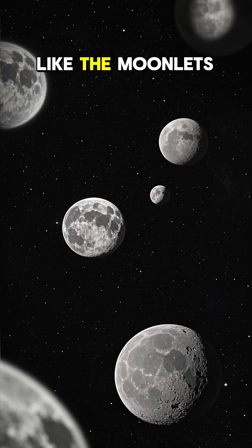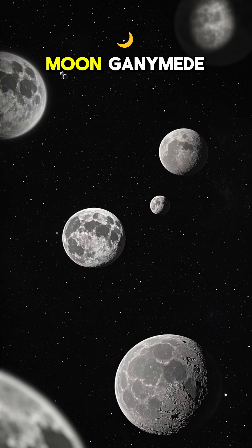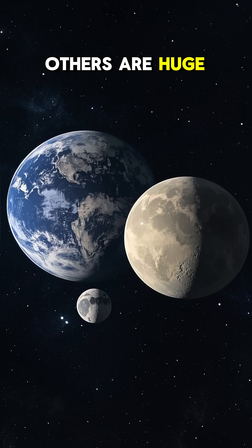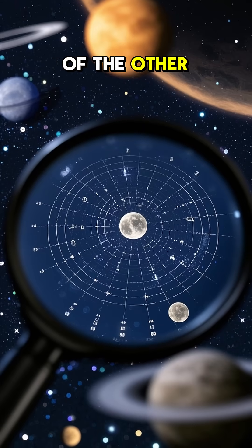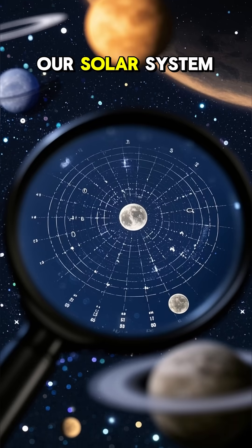Some are small, like the moonlets that orbit Jupiter's moon Ganymede. Others are huge, like Saturn's moon Titan, which is bigger than Earth's moon. Here are some of the other crazy facts about the moons in our solar system.